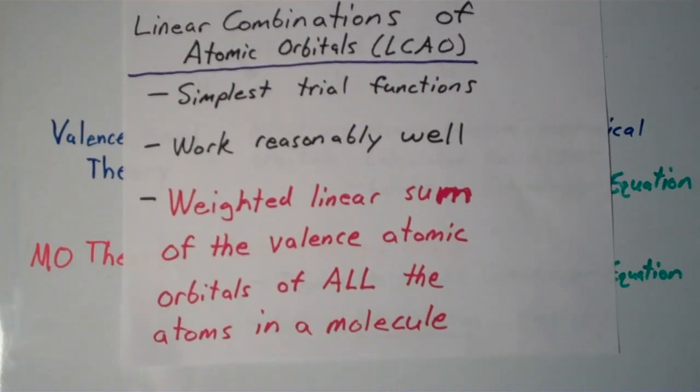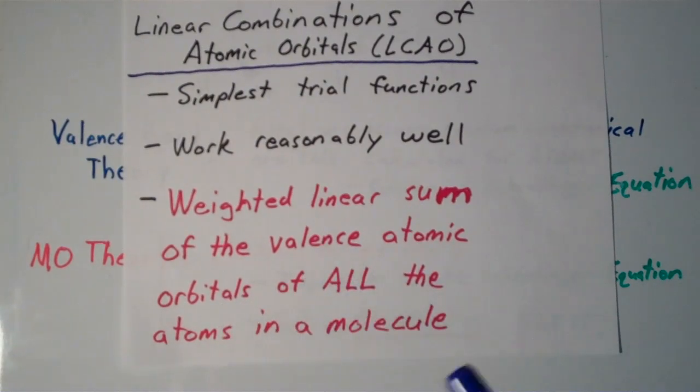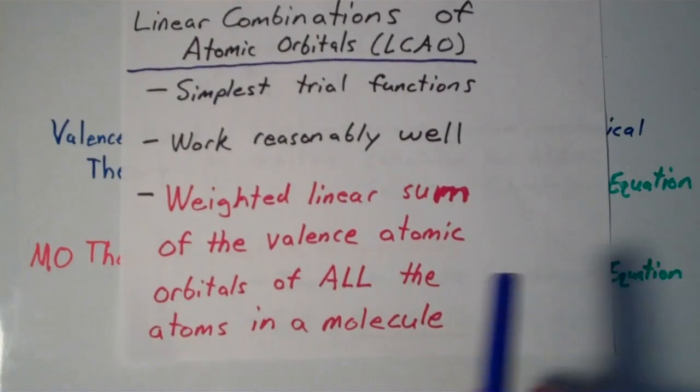And, basically, what an LCAO is, is it's a weighted linear sum of the valence atomic orbitals of all of the atoms in a molecule. So, a weighted linear sum is, basically, just like an average. And, it says the valence atomic orbitals, so valence means the outermost shell of the atomic orbitals. The valence atomic orbitals of all of the atoms in a molecule. So, this is the main difference between valence bond theory and molecular orbital theory with LCAOs.